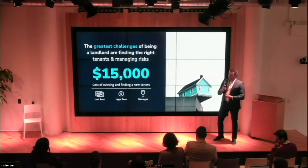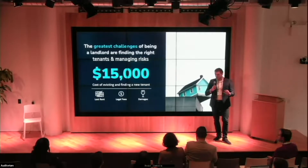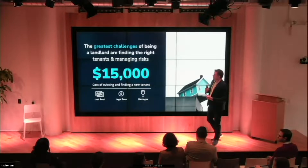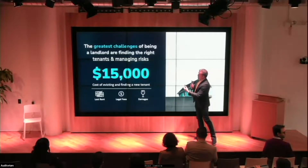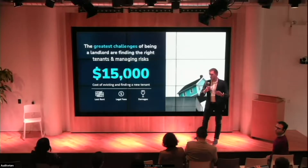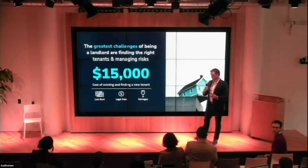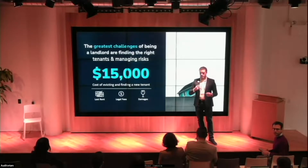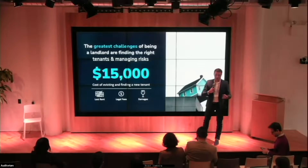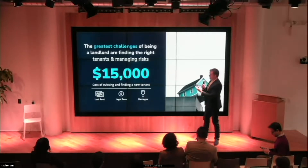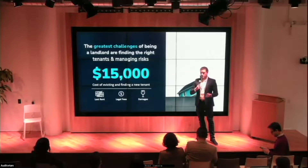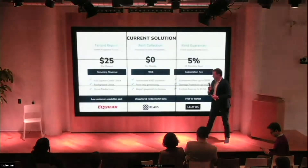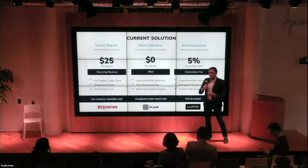One of the biggest challenges as a landlord is dealing with tenants that don't pay rent or damage your property. This can be very costly — the time to evict or go through the legal process can take up to six to eight months in many jurisdictions. As a landlord, you lose about six months of rent, incur legal fees and property damages — easily adding up to $15,000 or $20,000 in lost rental income and other costs. Currently, we're the only solution in the market with a great way of mitigating this problem.